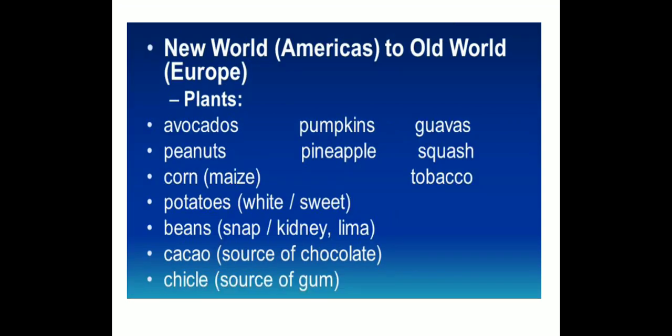If you look at the exchange from new world to old world, the plants which were domesticated and native to the new world that got introduced to the old world were: avocados, peanuts, corn (also known as maize), potatoes, beans, cocoa, squash, pumpkins, pineapple, guava, and tobacco. So these were the crops which got introduced to the old world — otherwise they were not known there.